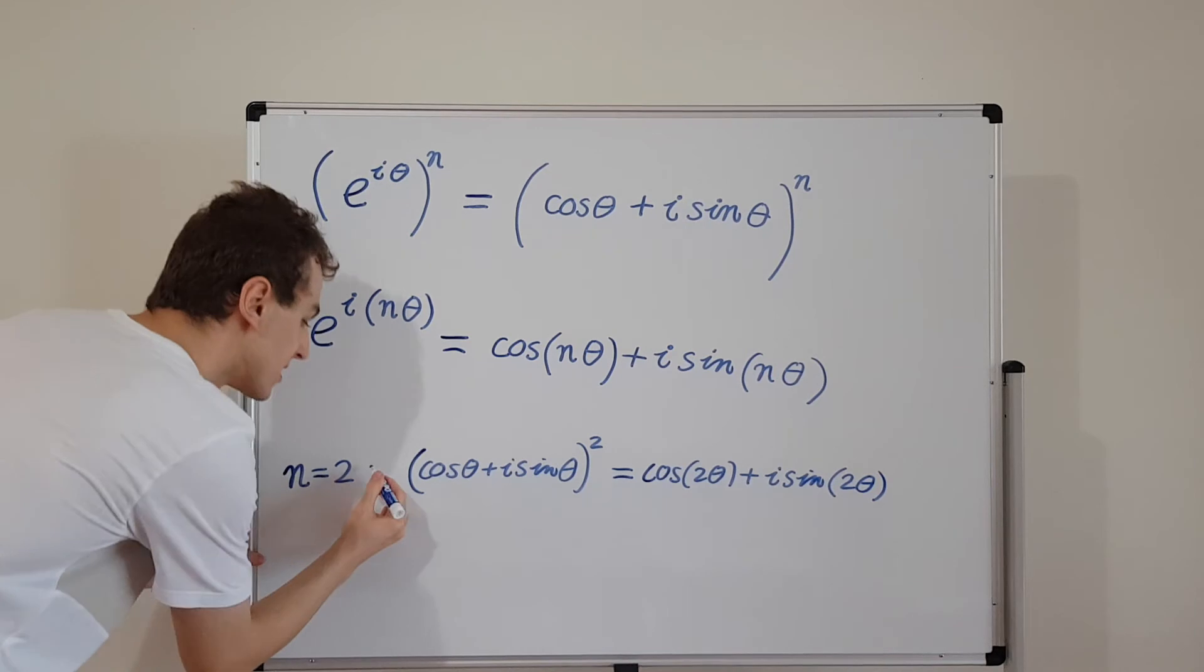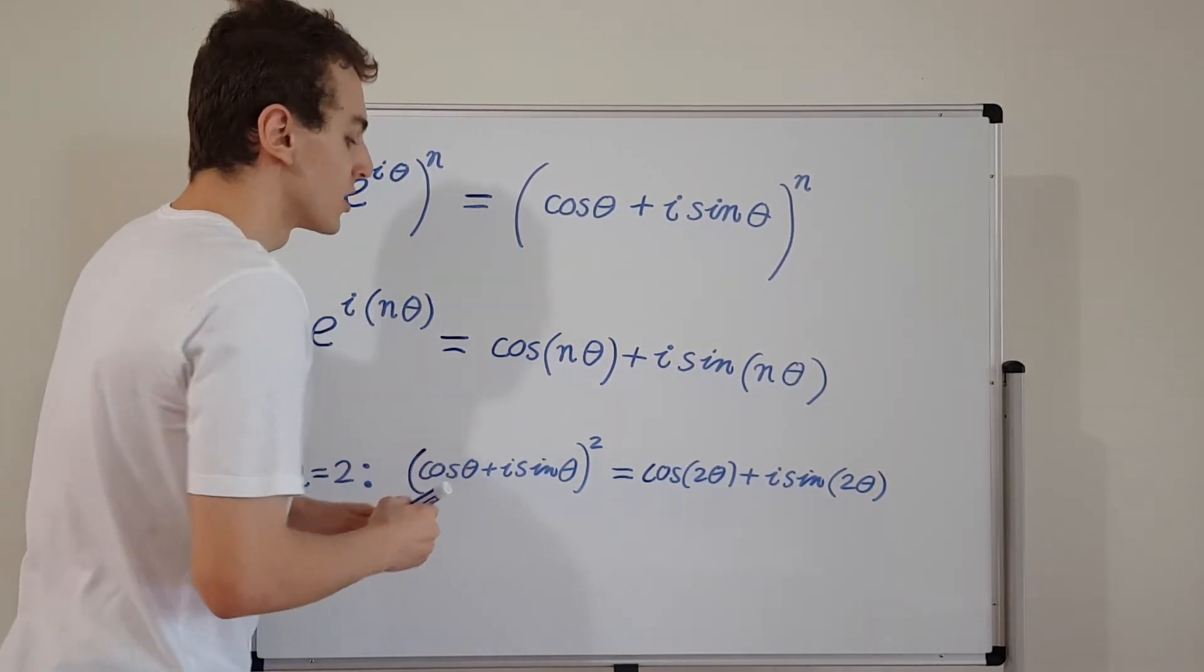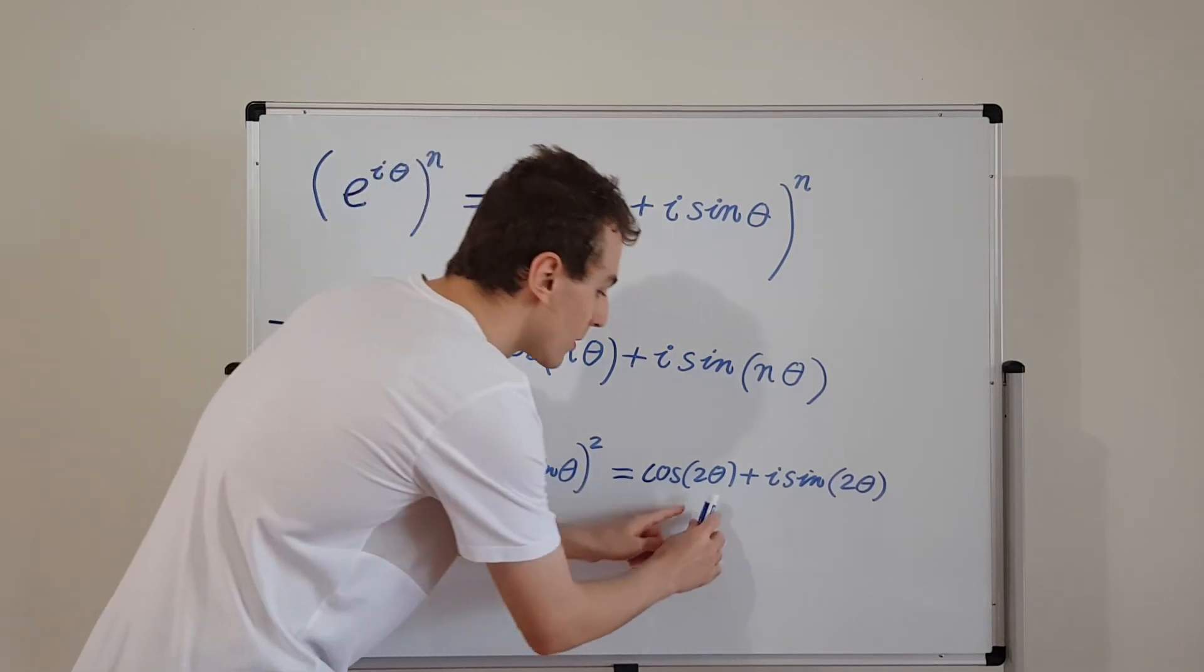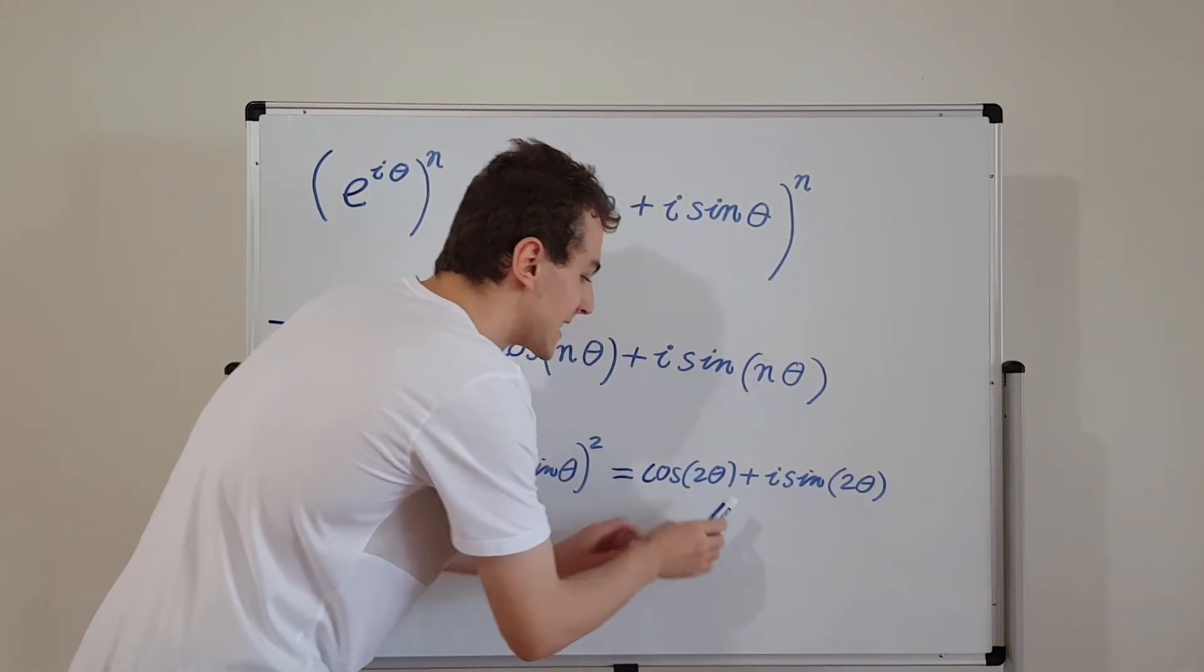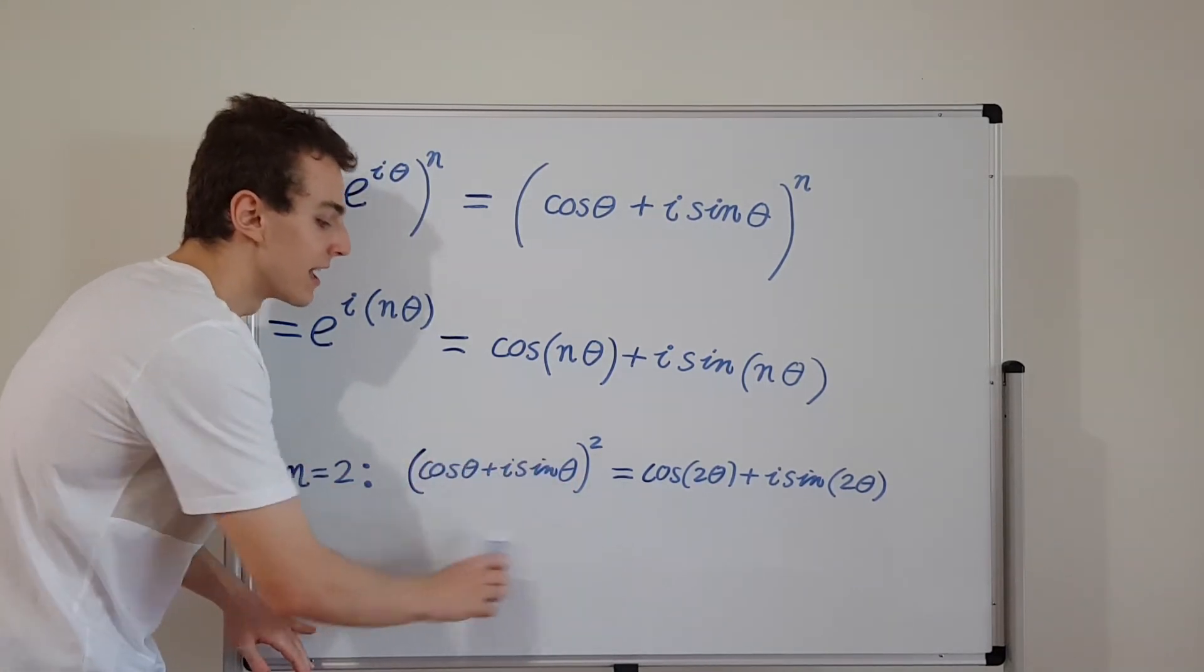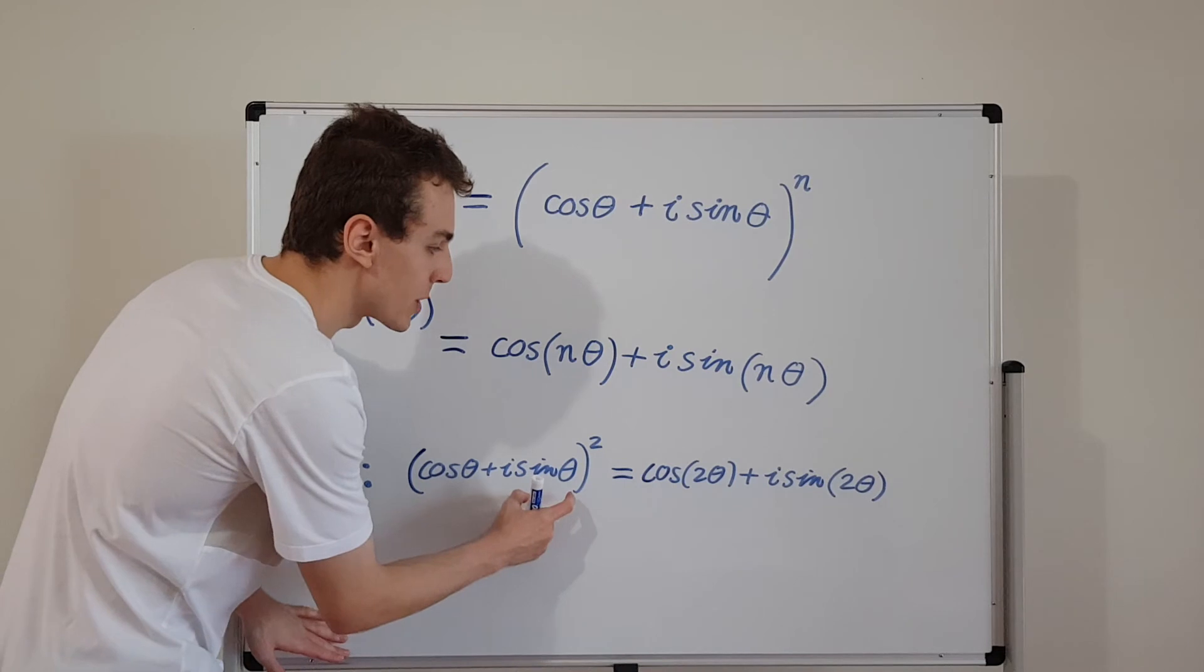So you can see this is just a special case of de Moivre's theorem. And we've used this in a previous video. So squaring is the same as multiplying by 2 inside over here. So doubling the angle has the same effect as squaring this complex number. This is the real component and this is the imaginary component.